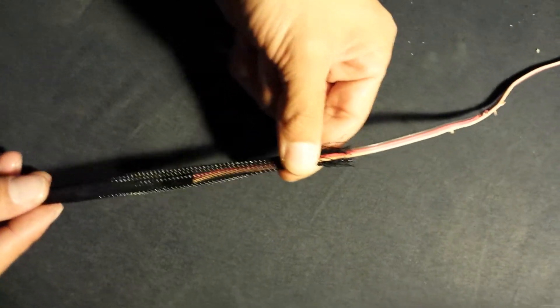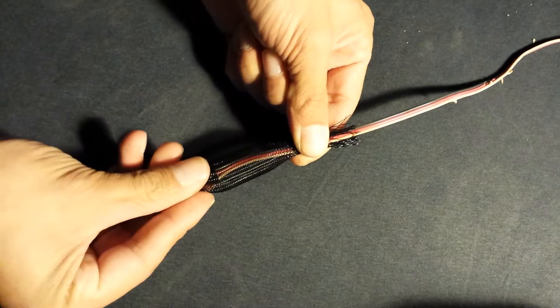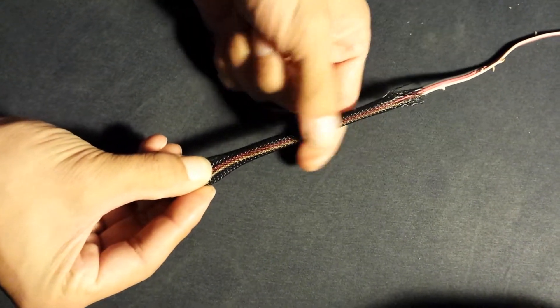And then just grab the servo lead, push it on, and then you grab the end of the extension there. And look at that, it just pops right on.